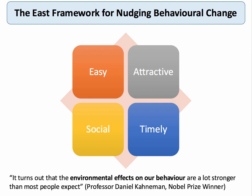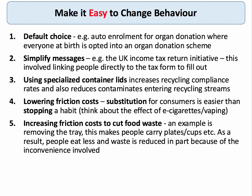The Behavioural Insights Unit in the UK has developed a mnemonic for nudging people to change their behaviour: EAST. The first element is make it easy to change behaviour. The easiest way is to change the default — as in Wales, the auto-enrolment for organ donation where people are opted in at birth and have to opt out. Simplifying messages on tax returns and websites makes it easy to change behaviour. And when it comes to recycling, using colourful and specialised container lids makes it easy for people to decide where their recycled rubbish goes.